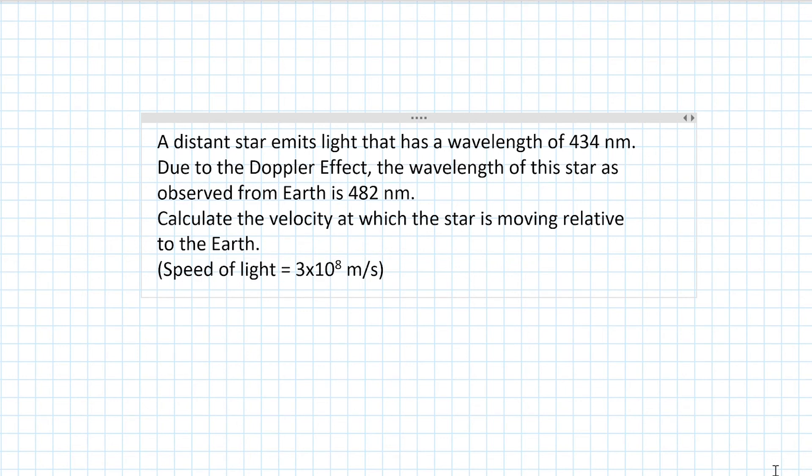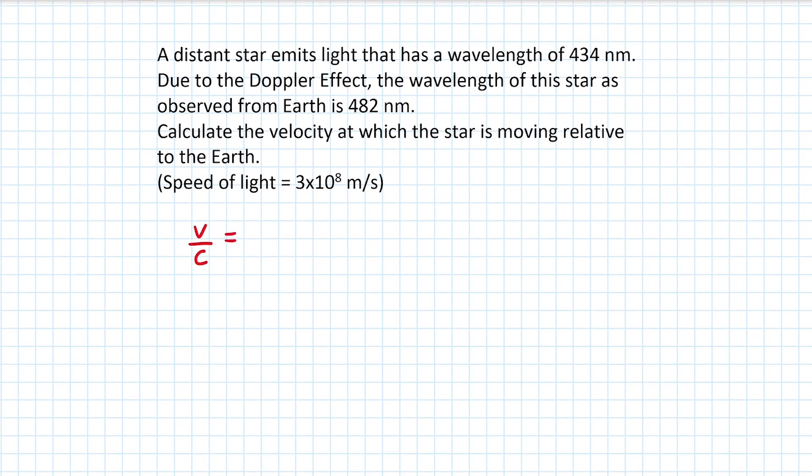Before we do any substitutions, let's rearrange the Doppler shift equation to make velocity the subject, since that's what we're trying to find. Bringing the speed of light to the other side, we have to multiply.